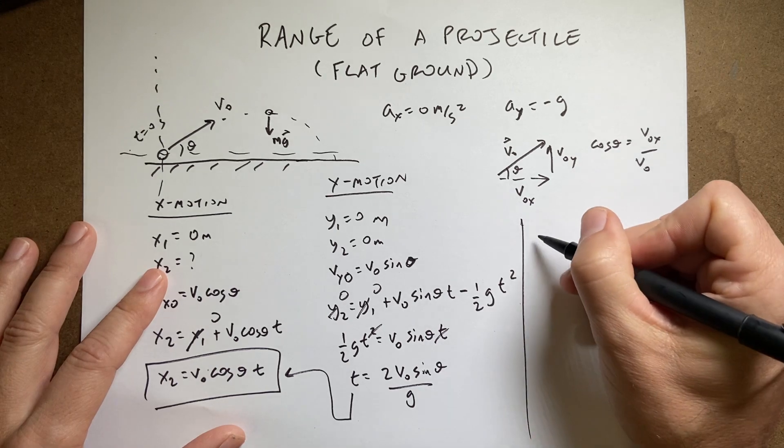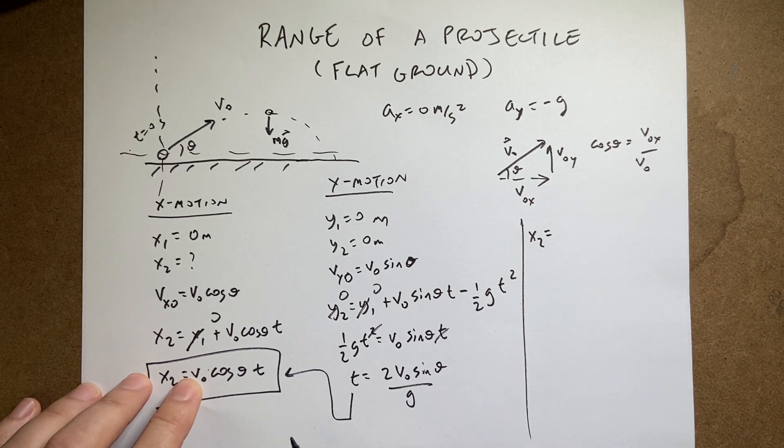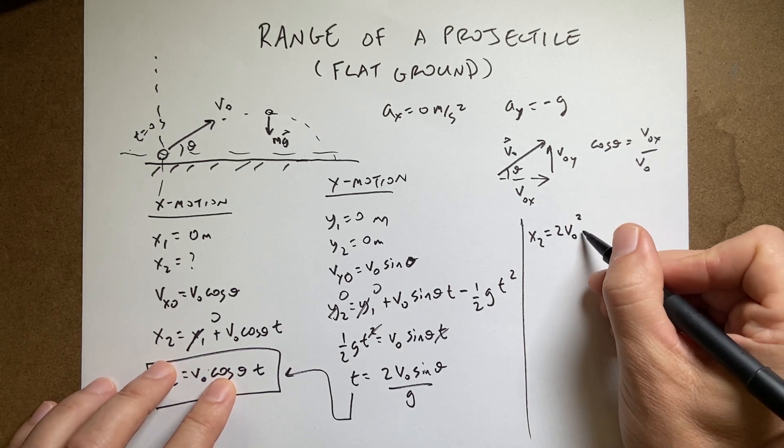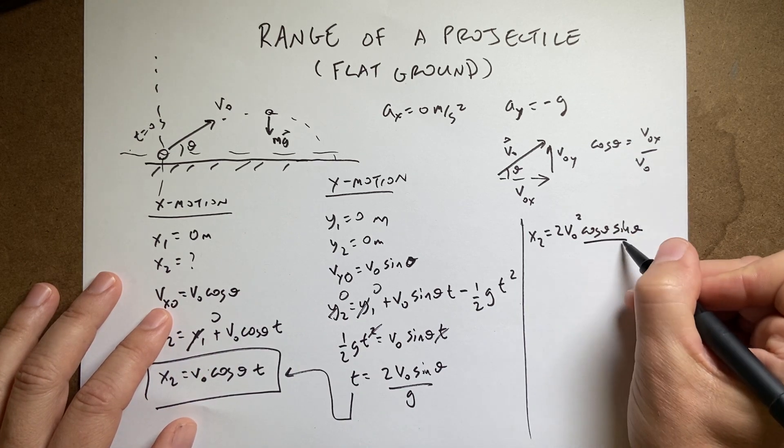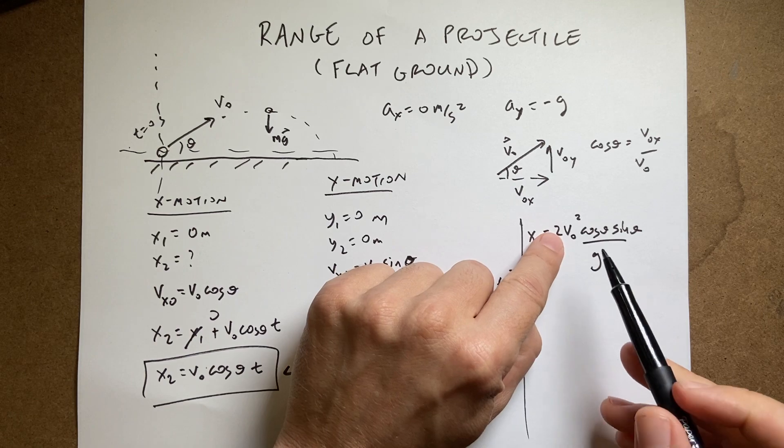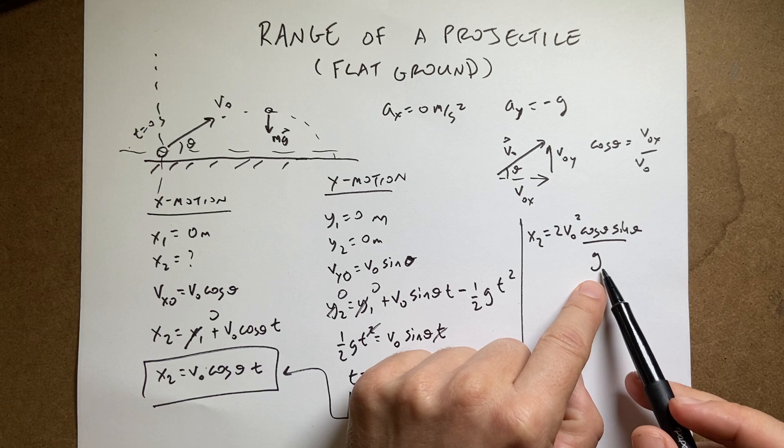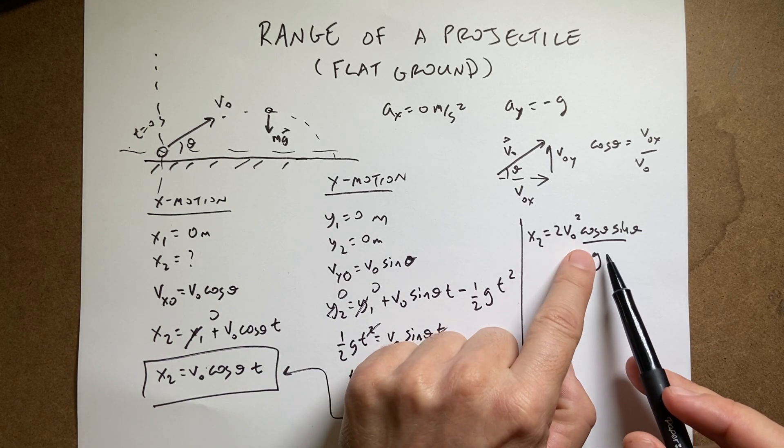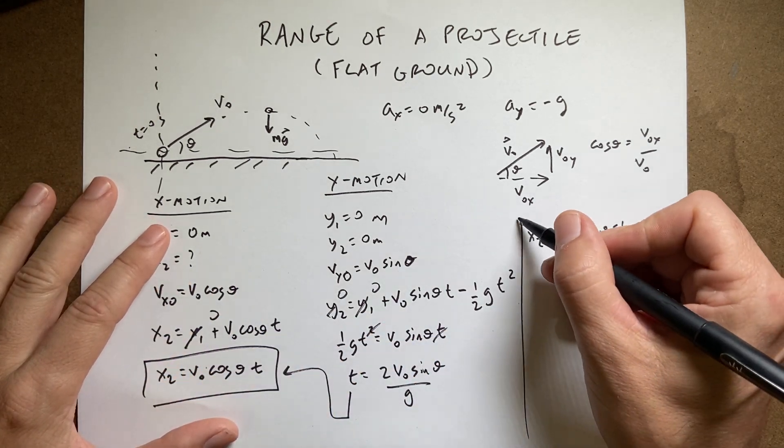And I get the following. I get x2, which is the range, is going to be, I have v0, I have two v0s, right, because t has a v0. So I get two v0 squared cosine theta sine theta over g. And this is checked. So this has units of meters squared per second squared. I divide this by meters per second squared. The second squareds cancel. One of the meters cancel. I get meters. Cosine theta has no units. Sine theta has no units. That's my answer.